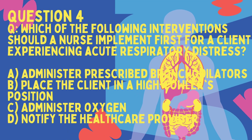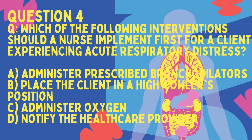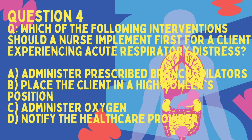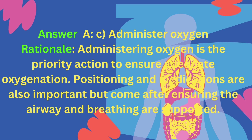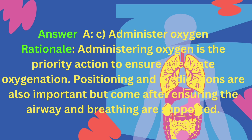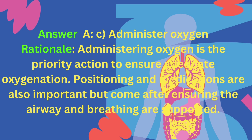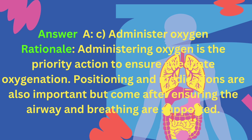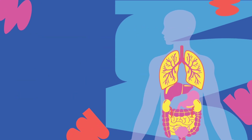Question 4. Which of the following interventions should a nurse implement first for a client experiencing acute respiratory distress? A. Administer prescribed bronchodilators. B. Place the client in a high-Fowler's position. C. Administer oxygen. D. Notify the healthcare provider. Answer: C, Administer oxygen. Rationale: Administering oxygen is the priority action to ensure adequate oxygenation. Positioning and medications are also important, but come after ensuring the airway and breathing are supported.